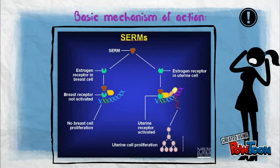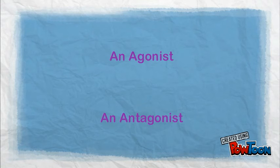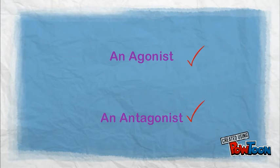Now we look at the basic mechanism of action. The purpose of selective estrogen receptor modulators is to target these receptors in specific tissues and to alter the effects by competitively competing for the binding site and acting as either an agonist or an antagonist. An agonist is a drug that fully activates a receptor that it attaches to. An antagonist is a drug that binds to a receptor but does not activate it.